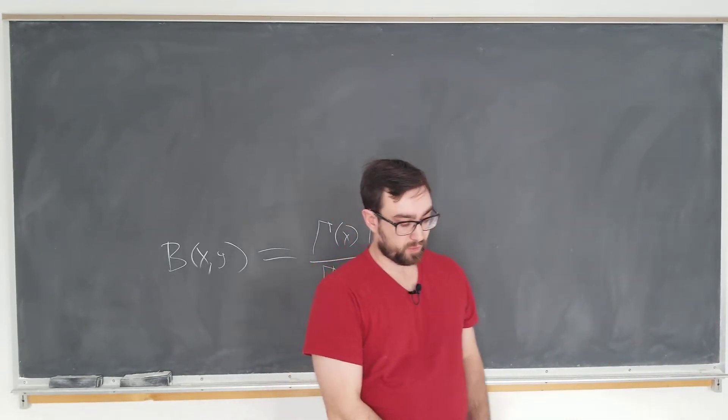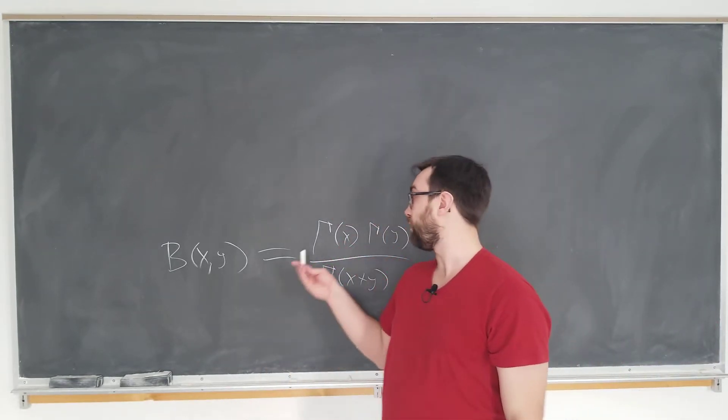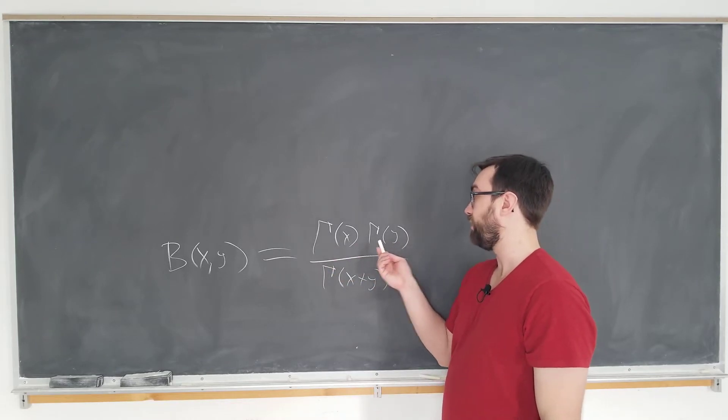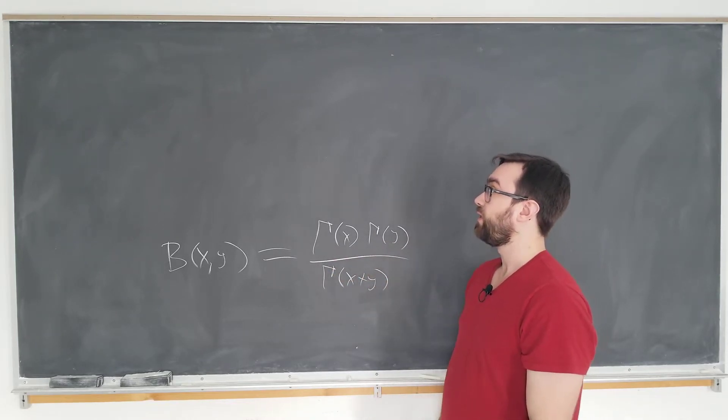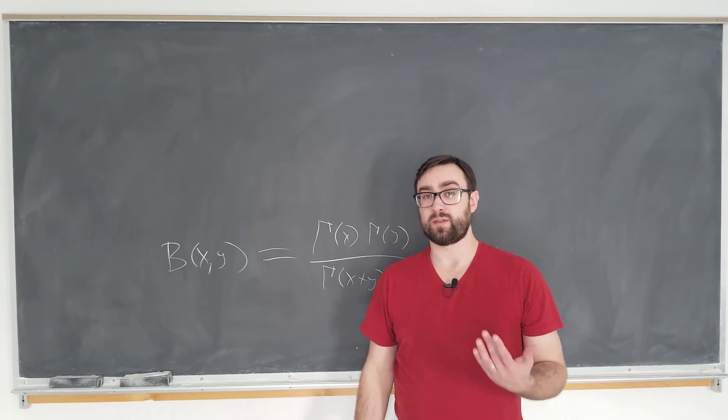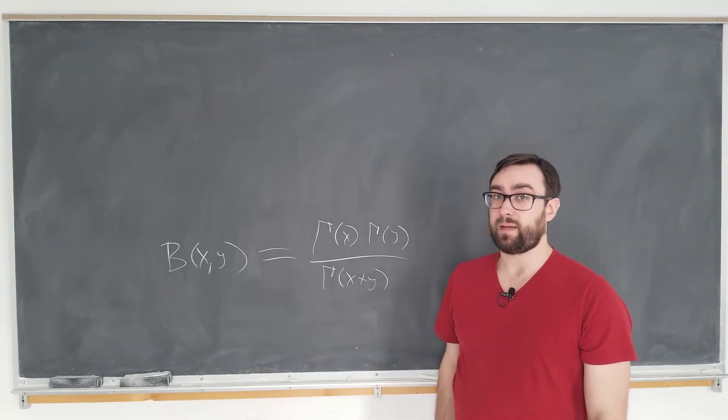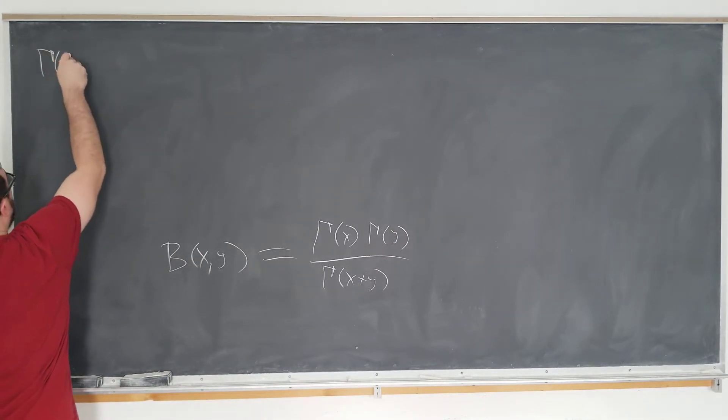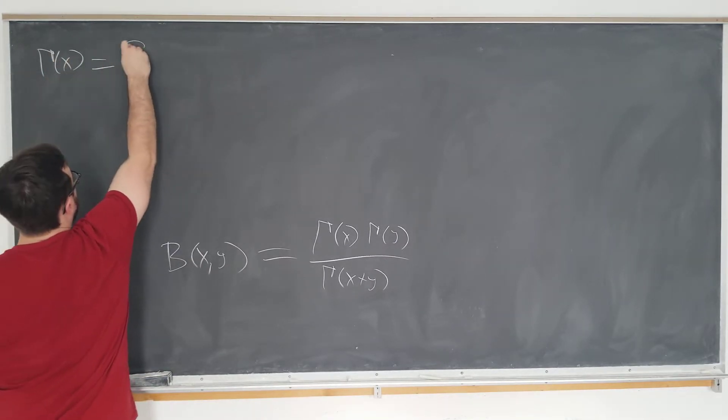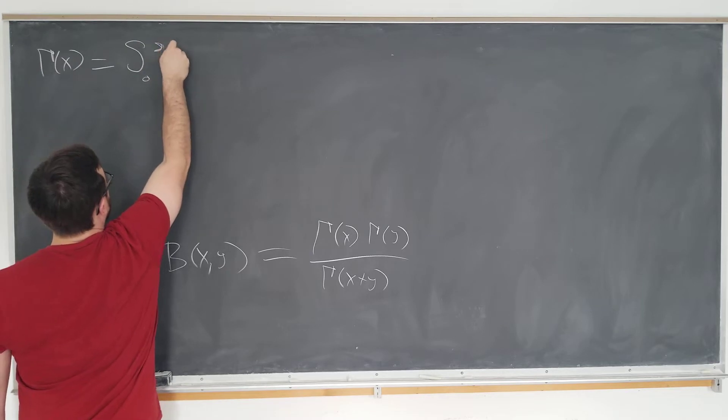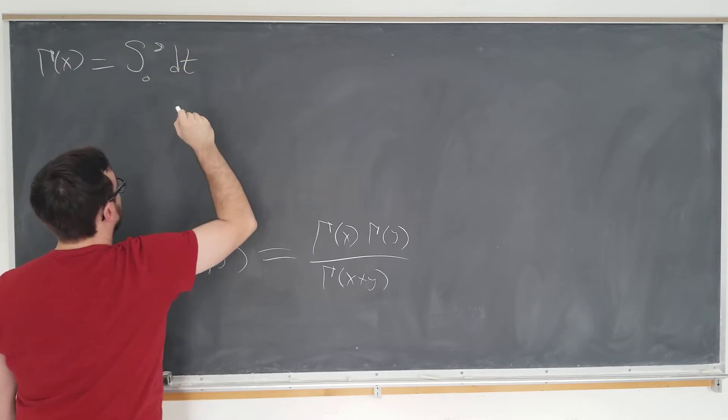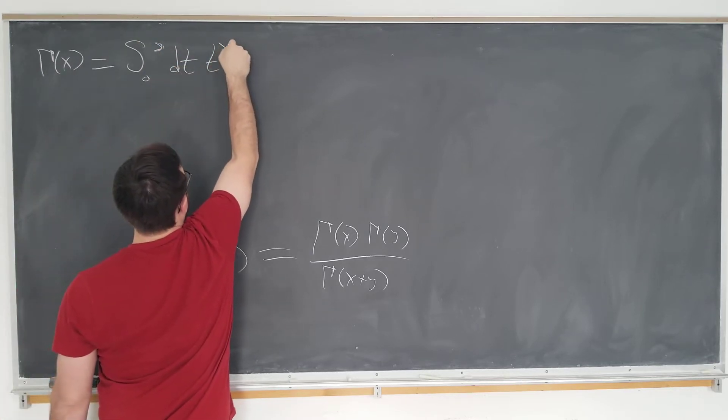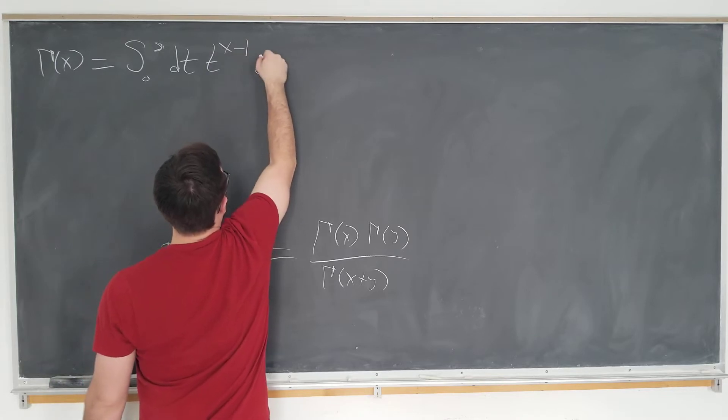And talking about the beta function, we're going to be multiplying two of the gamma functions, as you can see here, and we're going to need a particular integral representation of the gamma function to do that. First, let's define the gamma function itself. Gamma of x is defined to be integral from zero to infinity, respect to some variable t, and t to the x minus 1, e to the minus t.